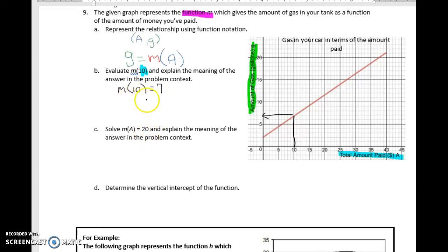And if we wanted to write that in terms of, without using function notation, we would say G equals 7 gallons. And then in terms of what does it mean in context, we're going to say the cost of $10 buys 7 gallons of gas.